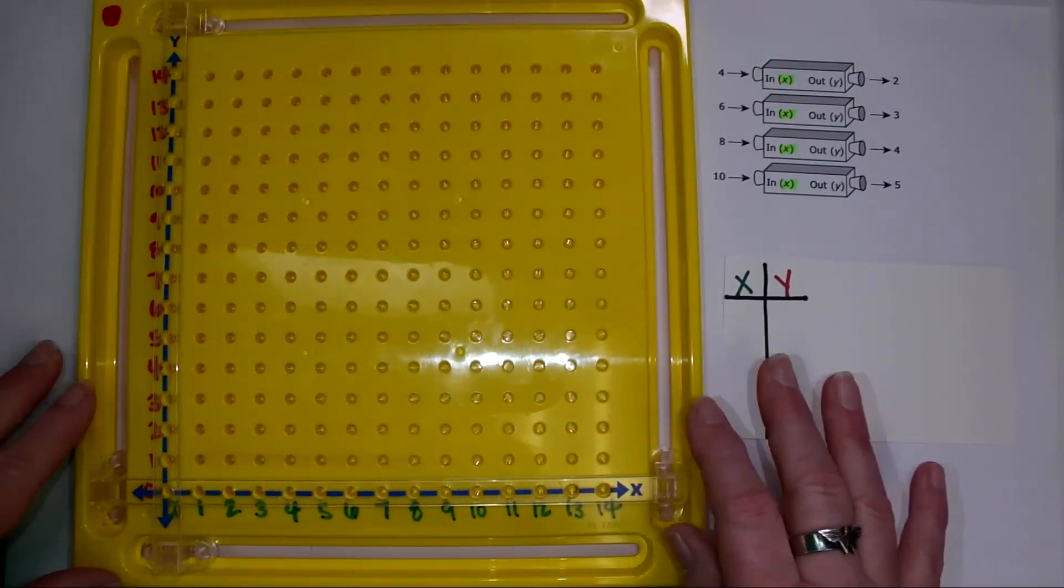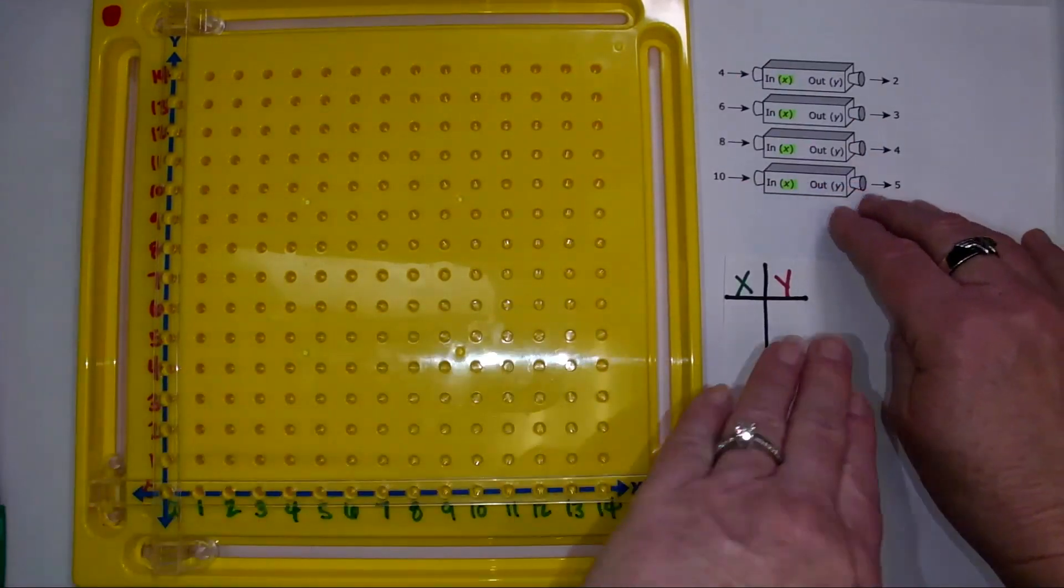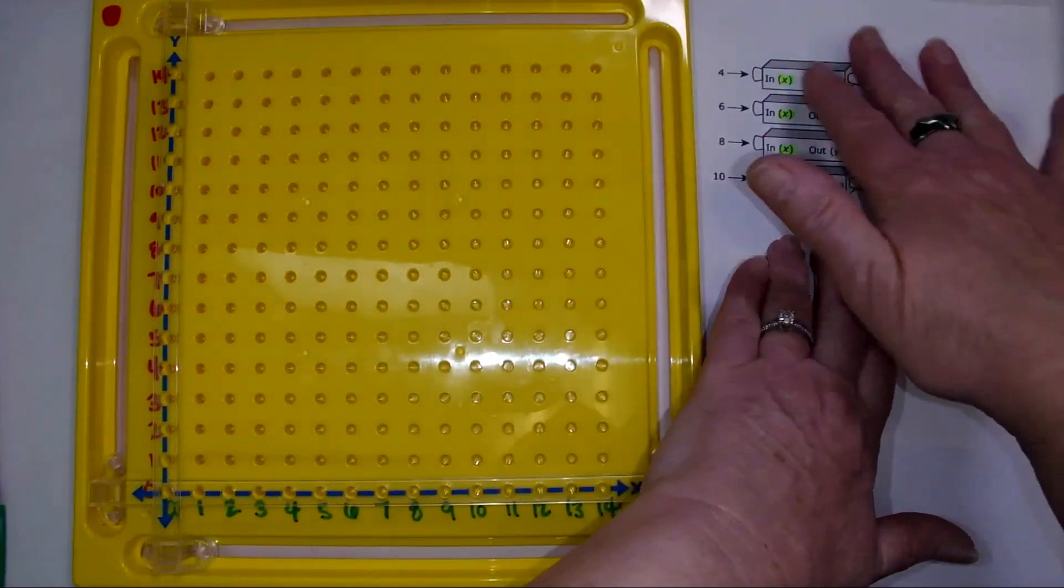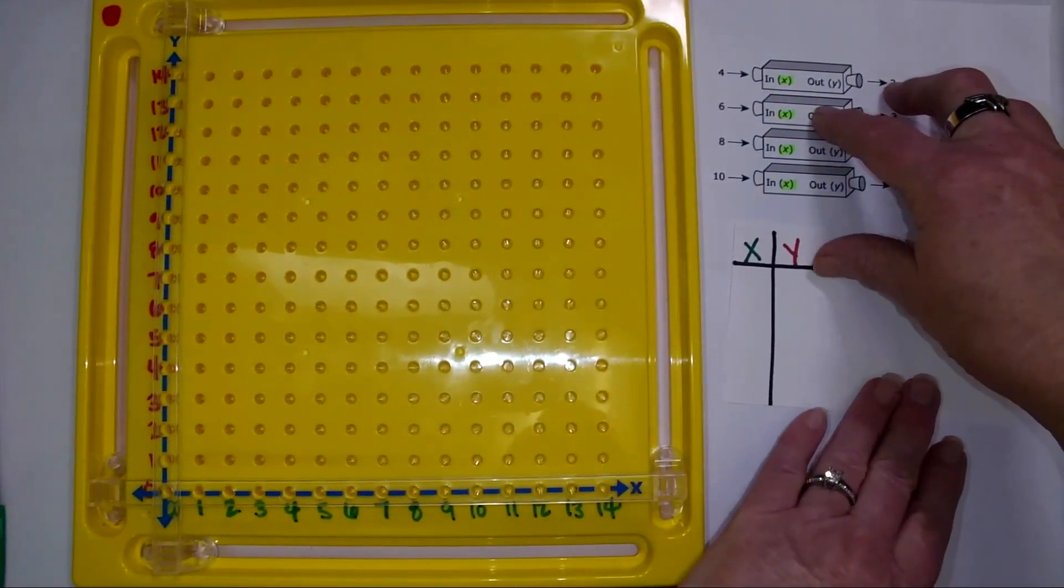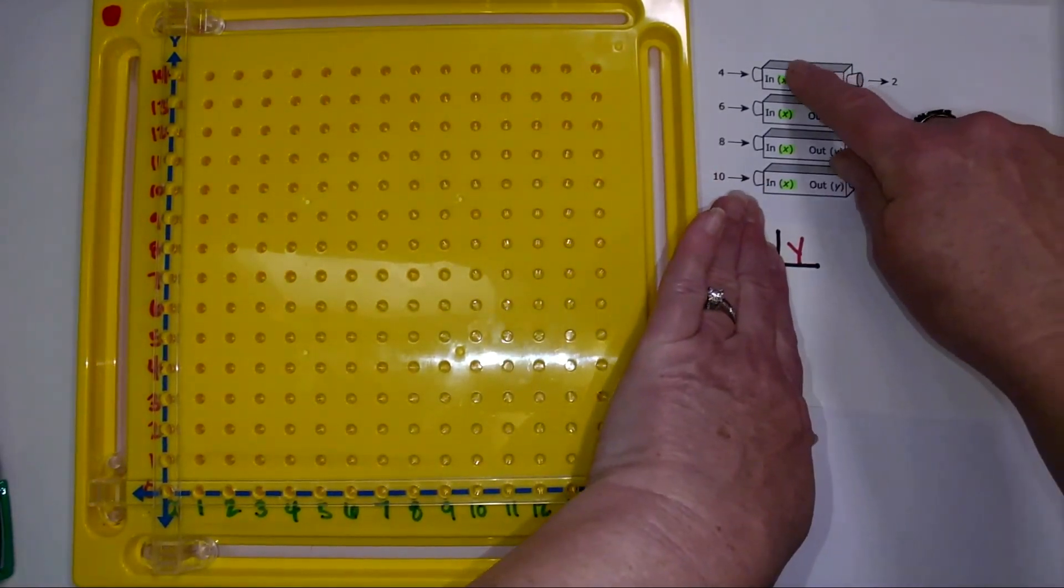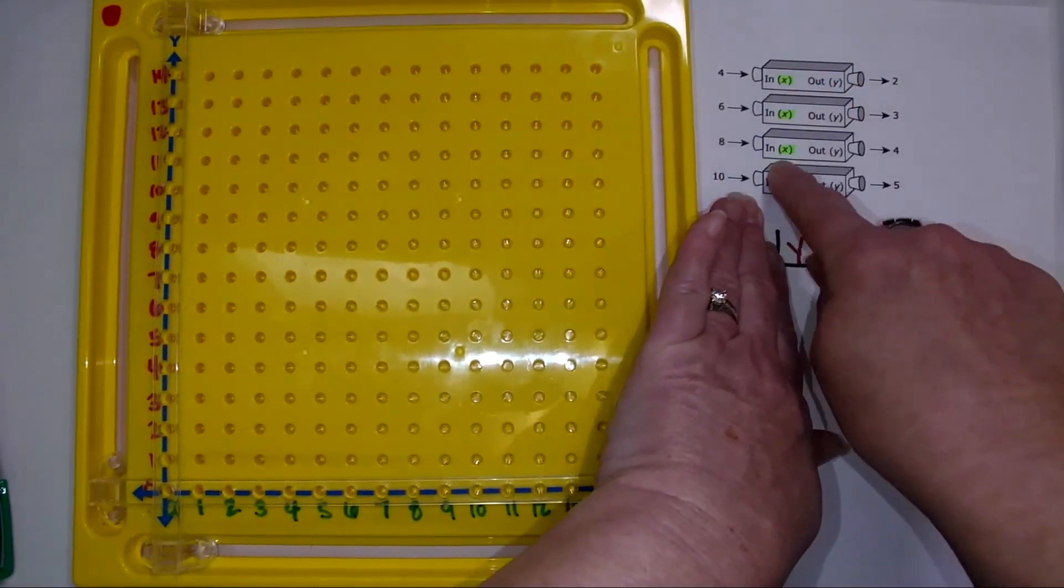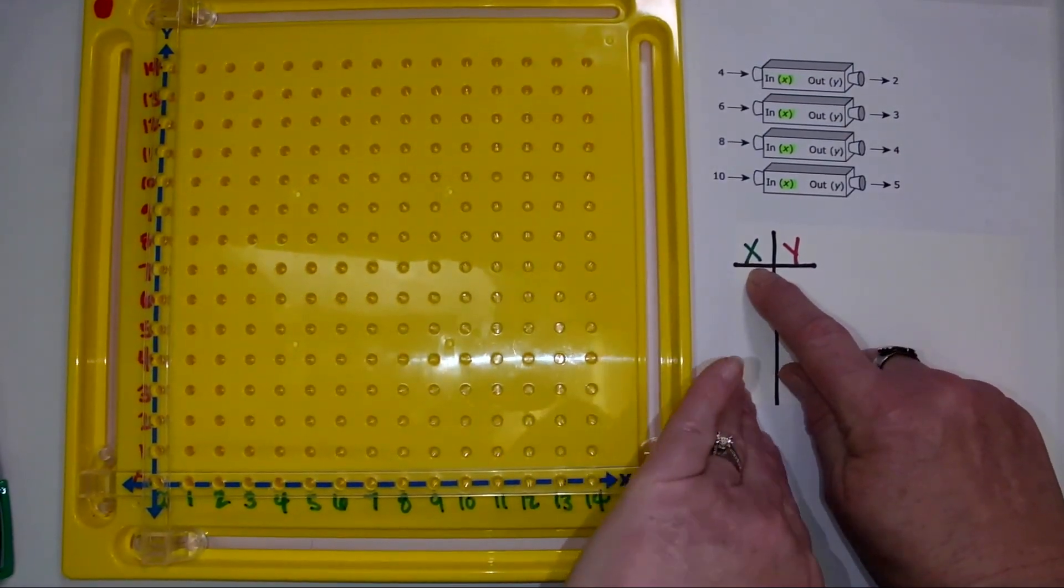We're going to use this xy coordinate pegboard to graph the points that are in this input-output machine. Before we can graph them, we actually need to put them into a table. So I helped my student here by marking all my x's in green.